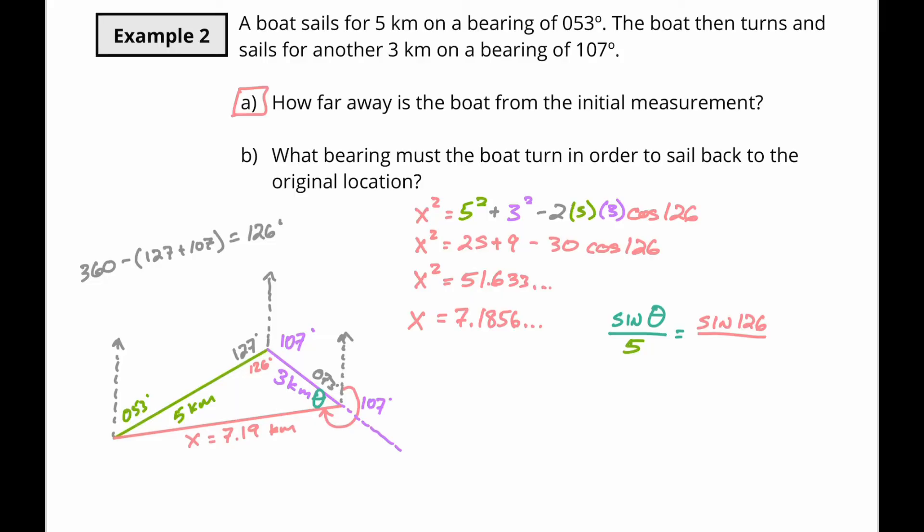because anytime you're working through a problem, you want to use the unrounded values. So I'm actually going to take this value right here, 7.1856, dot, dot, dot. And now I'm going to just start solving for theta.